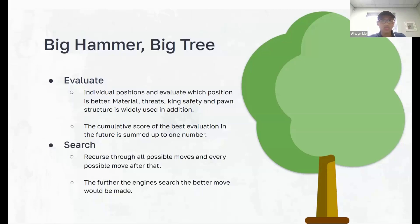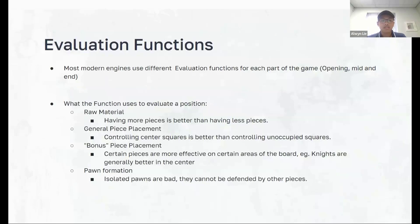The further an engine is able to search the tree, the better it will be. In terms of the evaluation function, most modern engines use different evaluations for each part of the game: the opening, mid, and end game. The functions can evaluate raw materials such as having more pieces or certain pieces having greater value than others, like the queen over a pawn. General piece placement — in chess you would want to control center squares rather than unoccupied squares on the edge of the board.